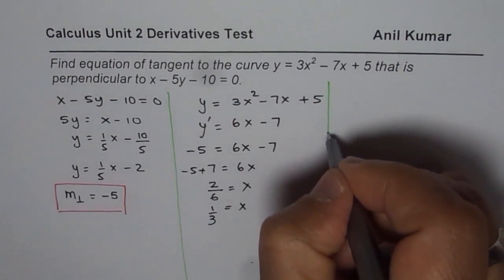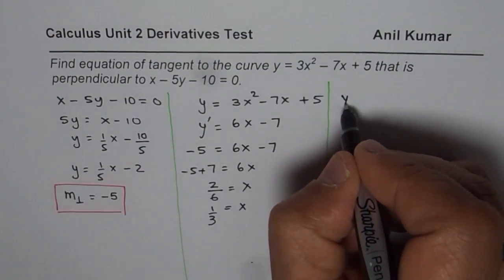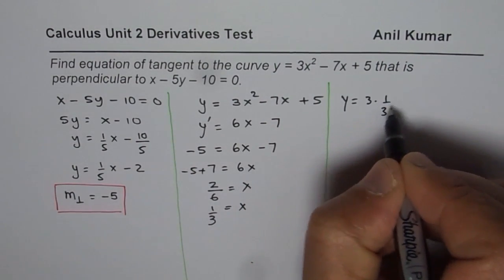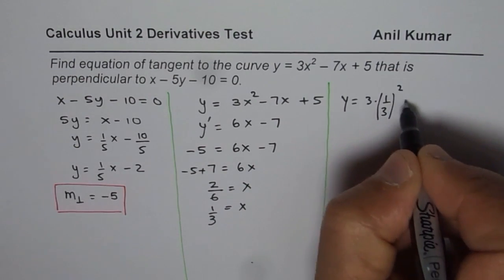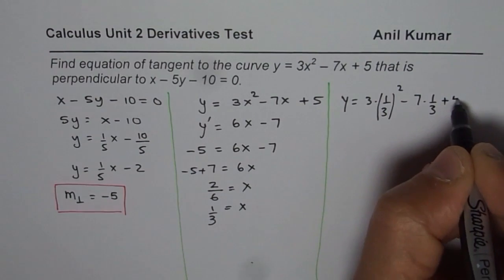So at 1 over 3 let us find what is y value. And then we will find the equation of line. So we can substitute 1 over 3 in this equation. So we have y equals x is 1 over 3.